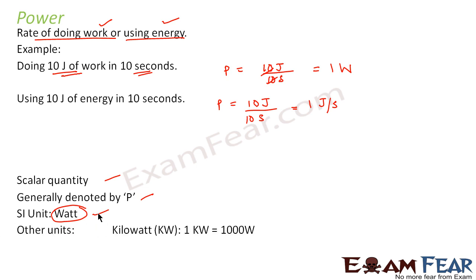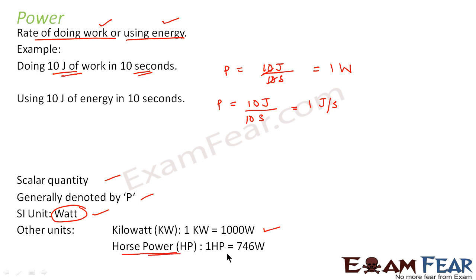There are other units which are also used — these are bigger units. 1 kilowatt is equal to 1000 watts. There is another unit which is generally a commercial unit: horsepower. 1 horsepower is equal to 746 watts, generally denoted as HP. Remember these conversions because they will help you while solving problems.